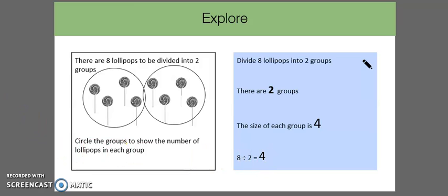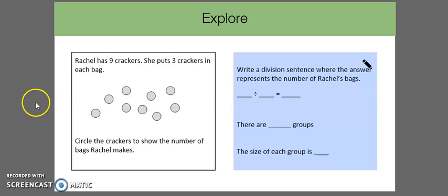Now we're ready to move on to the next problem. In this problem, Rachel has 9 crackers. She puts 3 crackers in each bag. Circle the crackers to show the number of bags Rachel makes.